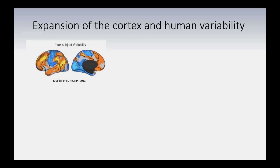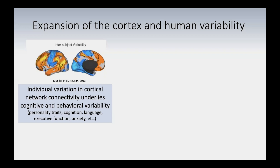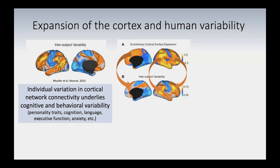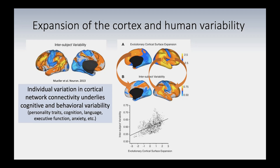Human variability in cognition and behavior is related to expansion of the neocortex — specifically, highly interconnected regions in the frontal, temporal, and parietal lobes. A 2013 paper showed that the orange regions — the most highly variable — are in the frontal, temporal, and parietal lobes, with the sensory-motor cortex being least variable. Individual variation in cortical network connectivity underlies cognitive and behavioral variability: personality traits, cognition, language, executive function, anxiety, etc. These same regions are those that have expanded the most on the human lineage, as shown quantitatively here.